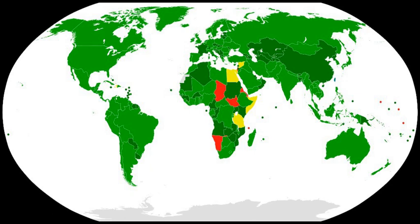The Seventh Review Conference was held in Geneva from 5 to 22 December 2011. The Final Declaration Document affirmed that under all circumstances the use of bacteriological, biological, and toxin weapons is effectively prohibited by the Convention, and the determination of states' parties to condemn any use of biological agents or toxins other than for peaceful purposes, by anyone at any time.